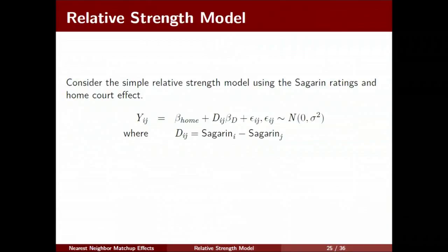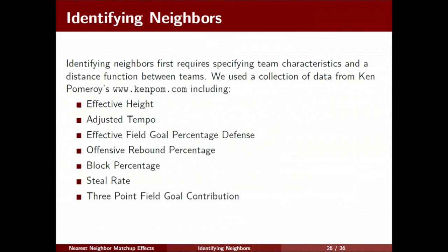This is the actual specific model that we use. We use the Sagarin ratings and a home court effect for estimating them. Of course, the NCAA tournament itself is on neutral sites, so the home court effect drops out of the model. And you end up with a very simple linear model looking at the difference in the Sagarin ratings. And again, this model on its own has that strict transitivity property.